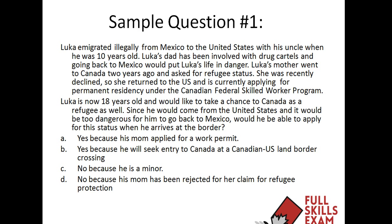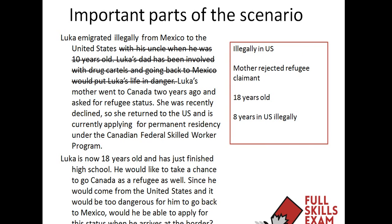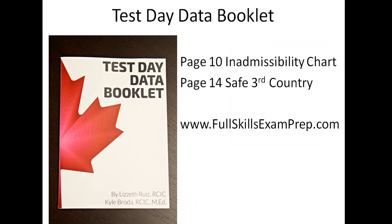Let's take a look at the analysis. We're looking at the important parts of this scenario. His uncle's story is not important here. The key facts are: he is illegally in the US; his mother is a rejected refugee claimant who applied to Canada and was rejected; he is 18 years old and has lived in the States for eight years illegally. If you look at your test day data booklet on pages 10 and 14, it's pretty concise to find the answer — but you have to practice using that book alongside the questions.